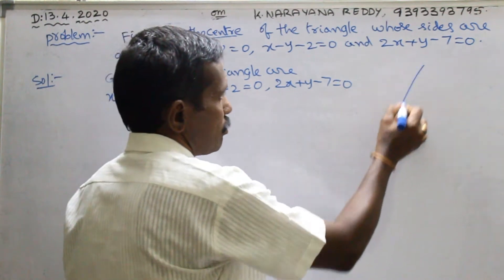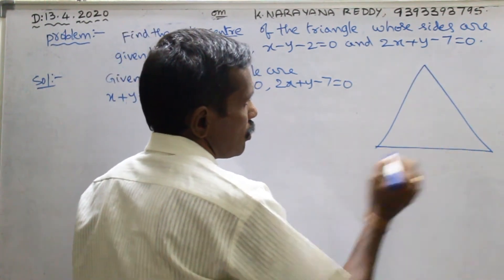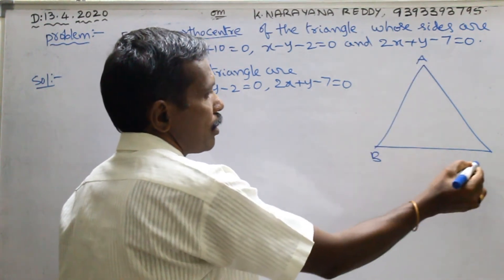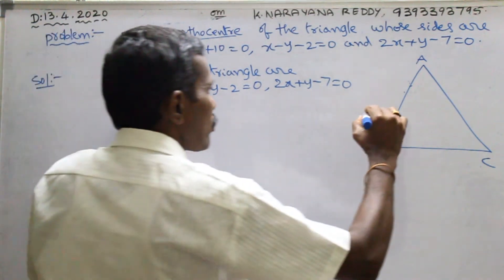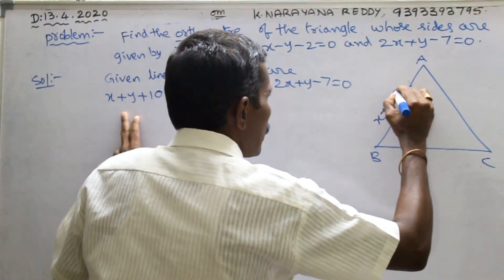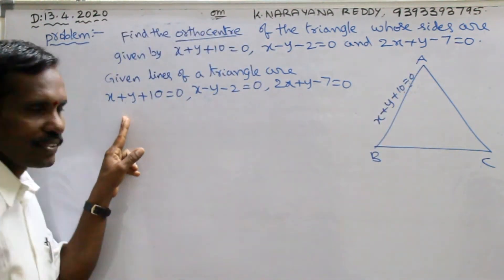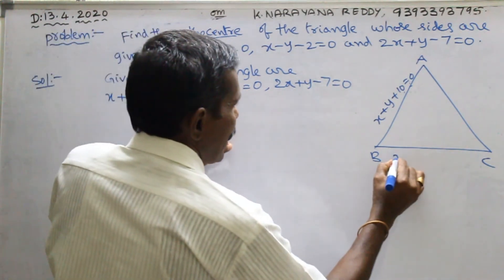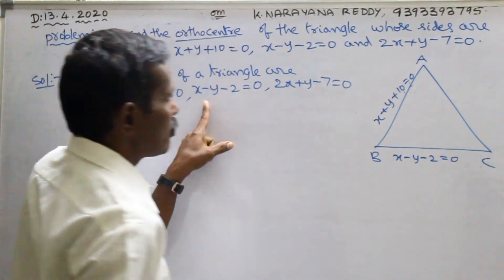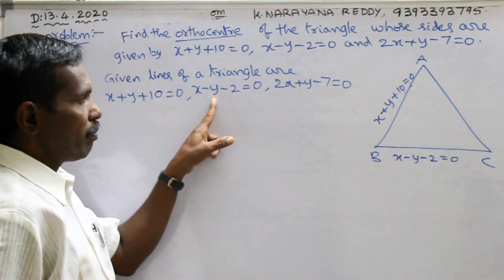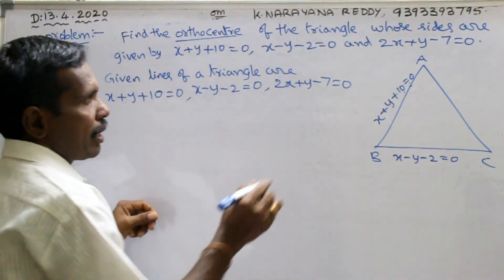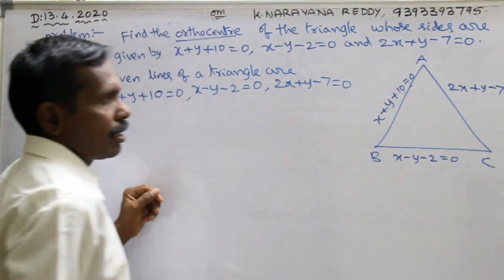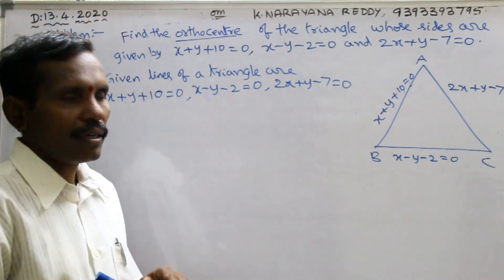Now take a triangle. For example, this is a triangle with vertices A, B, C. Side AB is x plus y plus 10 equals to 0. Side BC is x minus y minus 2 equals to 0. Side AC is 2x plus y minus 7 equals to 0. These are the three sides of a triangle.